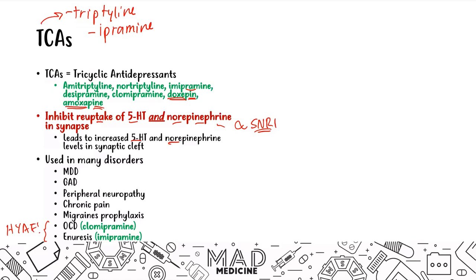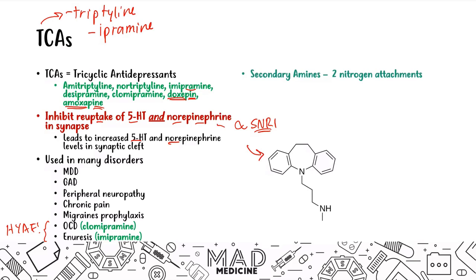When it comes to TCA chemical structure, it's important because it tells you what type of TCA it is and what its main effect will be. The first type is a secondary amine, which has two nitrogenous attachments. TCAs are called tricyclic antidepressants because they have three cyclical rings. A secondary amine has one, two R groups attached to the nitrogen.